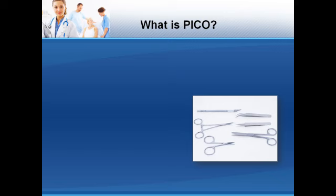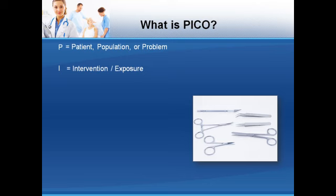Each of the four letters in PICO represents a common component of a clinical question. The P stands for patient, population, or problem. The I refers to the intervention or exposure. C stands for the comparative intervention or exposure. And O stands for outcome. There is also an optional fifth letter, T, which refers to the type of clinical question being considered.